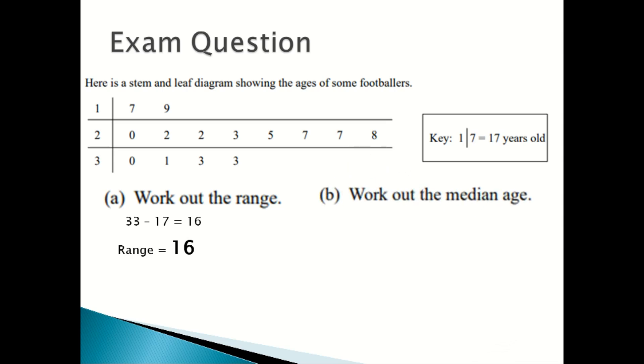And then to find the median age, there are 14 footballers in the diagram. To find the median, you use the formula n plus 1 divided by 2. n is the total amount in the list and there are 14 footballers. So you do 14 plus 1, which is 15, divided by 2, and you'll get 7.5.